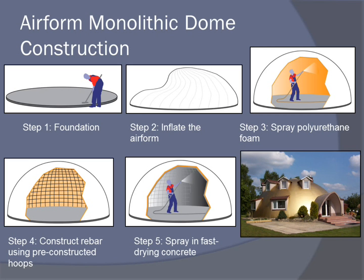Another type of construction became popular in the post-World War II period when the housing shortage led California architect Wallace Neff to create a new construction technique implementing pneumatics and shotcrete to create a bubble house. While his efforts were not popular, his work inspired the Binishell and air form monolithic domes, which are still in production today. Air form buildings are created by first laying a concrete foundation, attaching and inflating a dome-shaped balloon, spraying the interior with polyurethane foam, then installing pre-shaped rebar hoops, and finally spraying shotcrete onto the rebar.